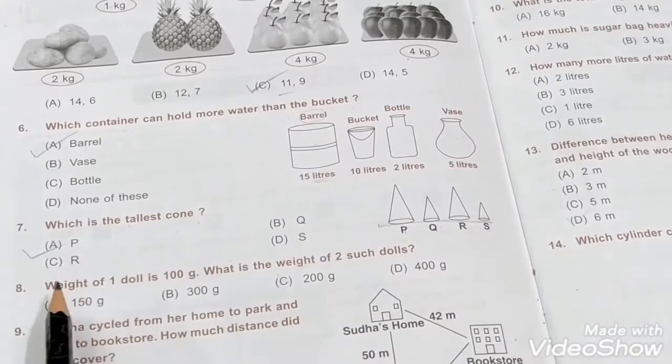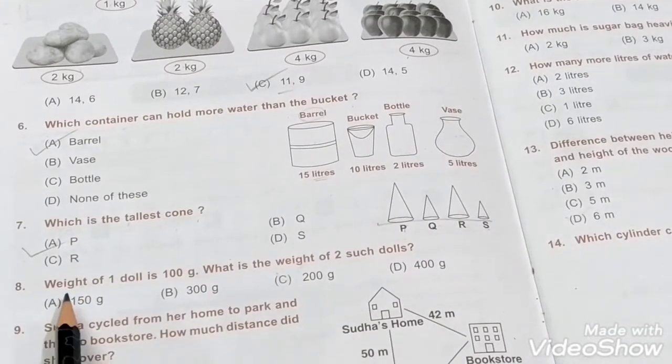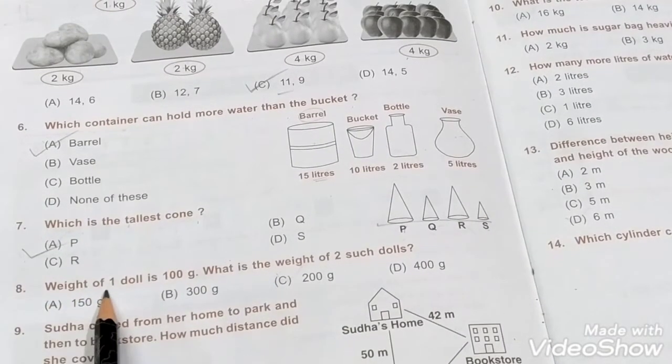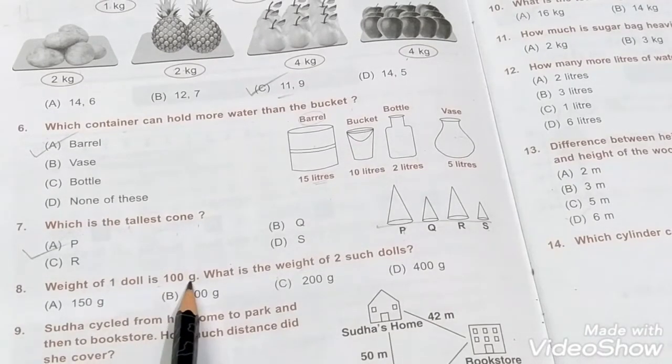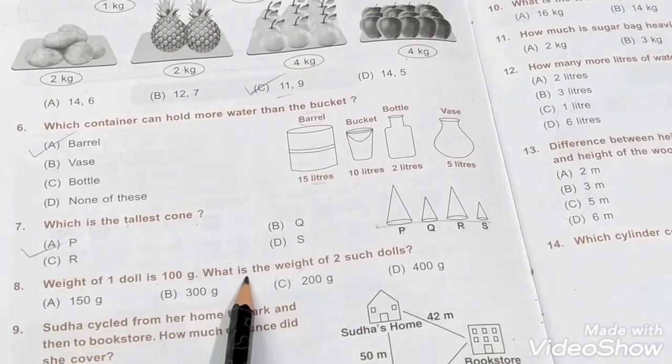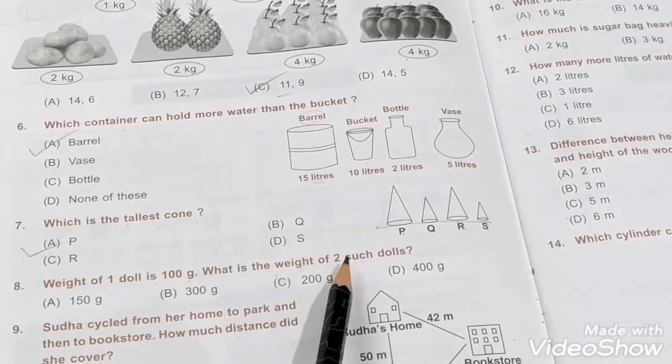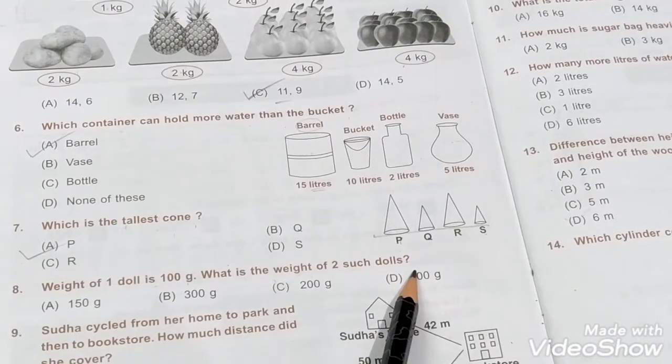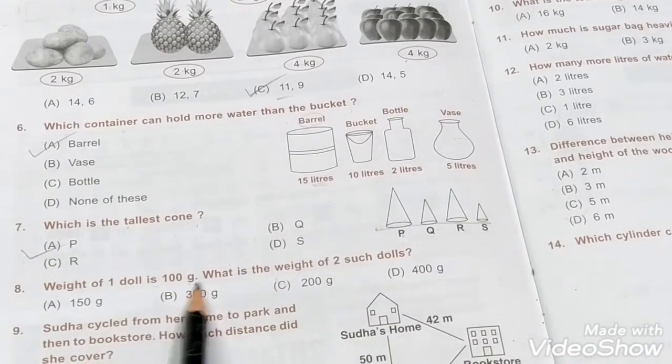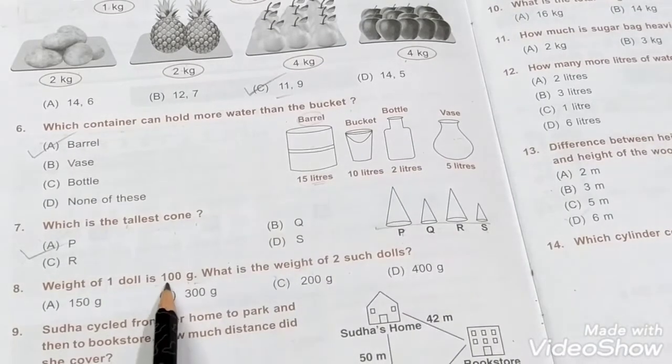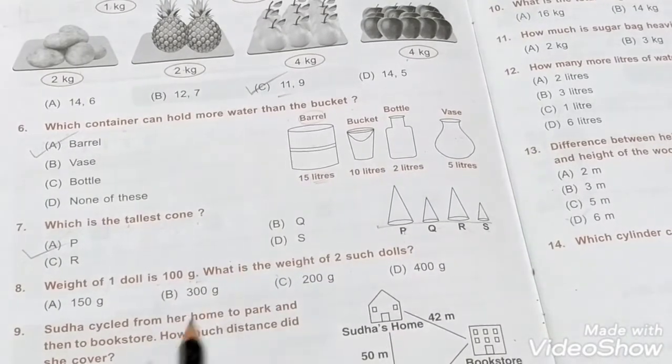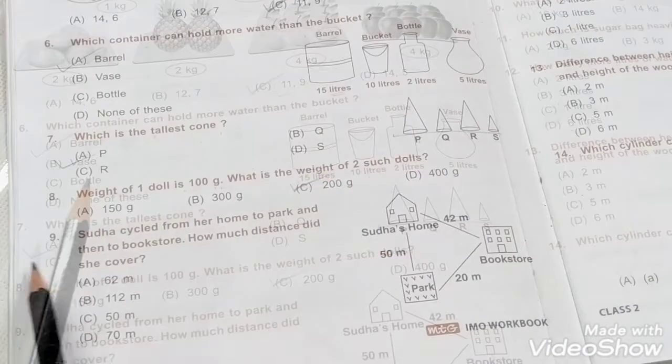Okay, next question: weight of one doll is 100 grams. What is the weight of two such dolls? One is 100 grams, so two is multiplied by two: 200. So C is the answer.